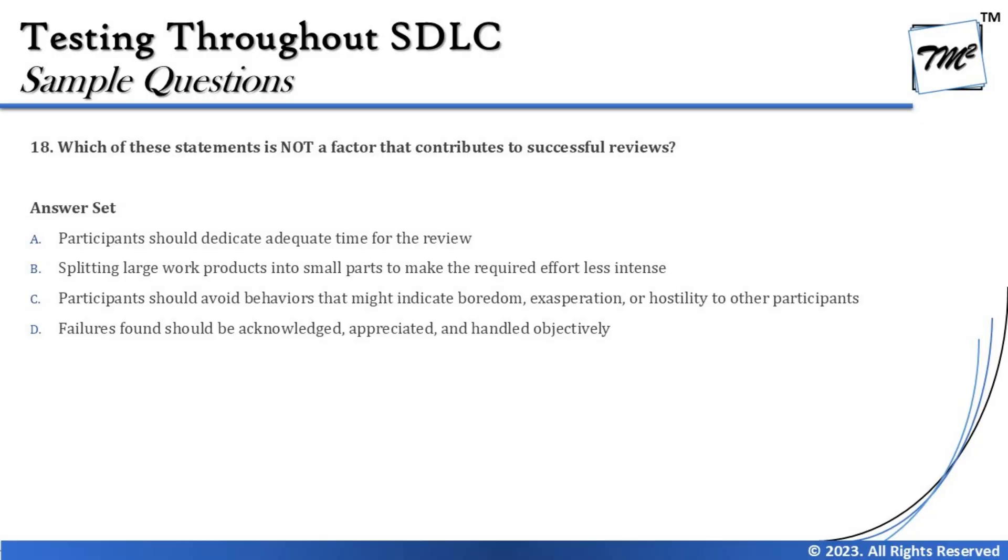The next question is question number 18, which asks which of the following statements is NOT a factor that contributes to successful reviews. We had the list of success factors discussed in the syllabus tutorial — things like selection of review types, not judging people, following adequate meeting practices, and management support. We have to read the options to judge which one is not a review success factor.